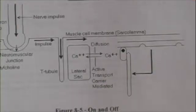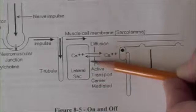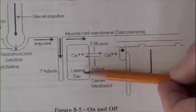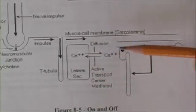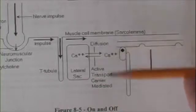When it reaches the lateral sac, it causes a change in the permeability of the lateral sac, and it allows calcium, which is stored in the lateral sac, to diffuse out into the surrounding cytoplasm of the muscle cell.